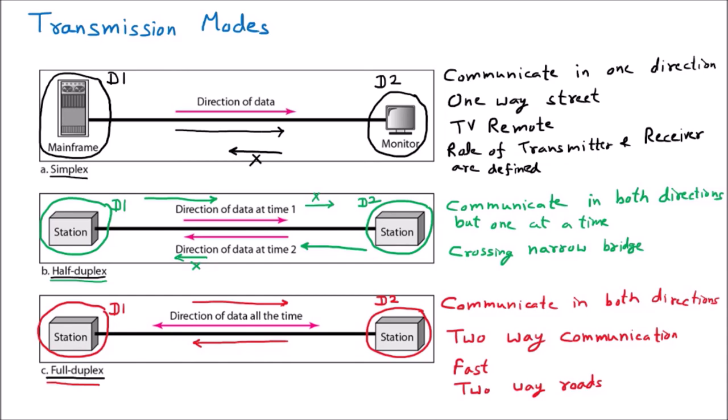All networking and telecommunication is based on full duplex — like phone calls, where you are speaking and the other person can respond in between. To summarize: simplex sends in one direction only; half duplex sends in both directions but one at a time; and full duplex sends in both directions simultaneously.